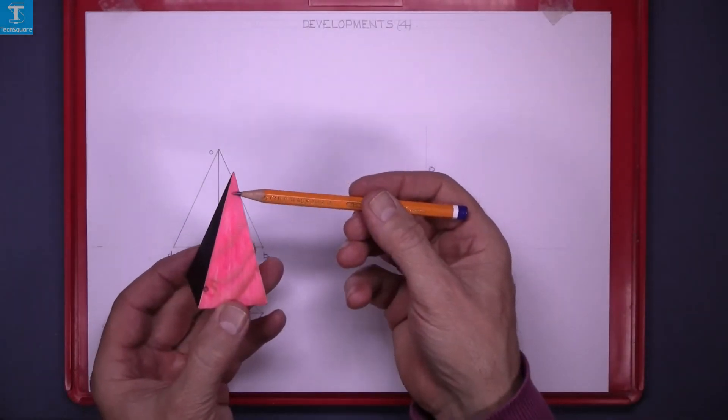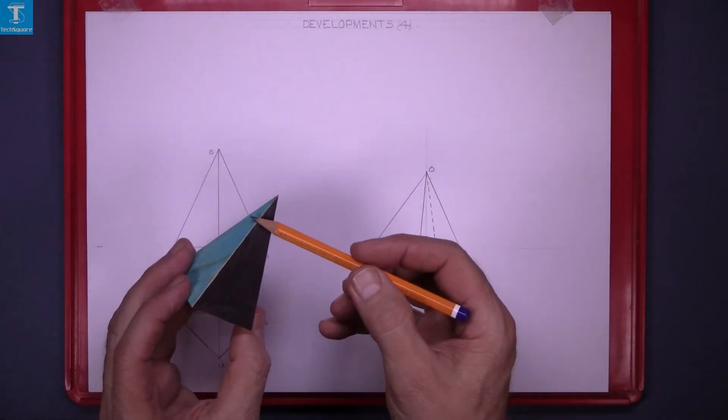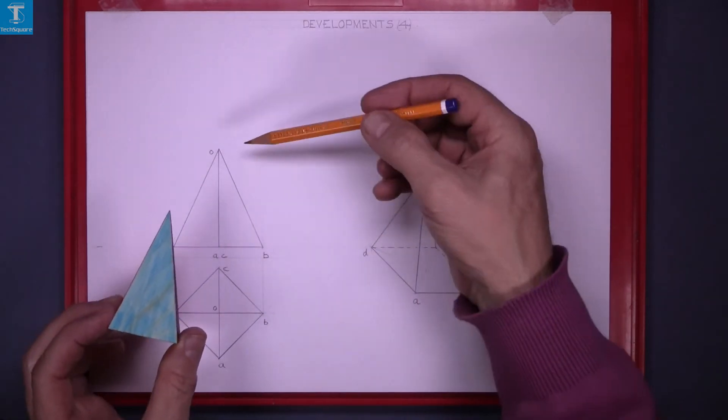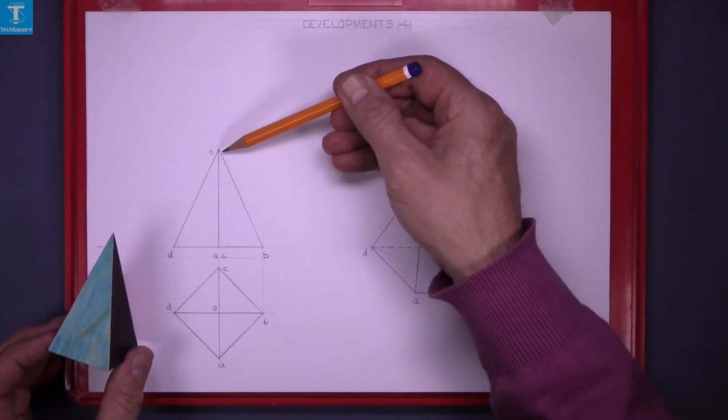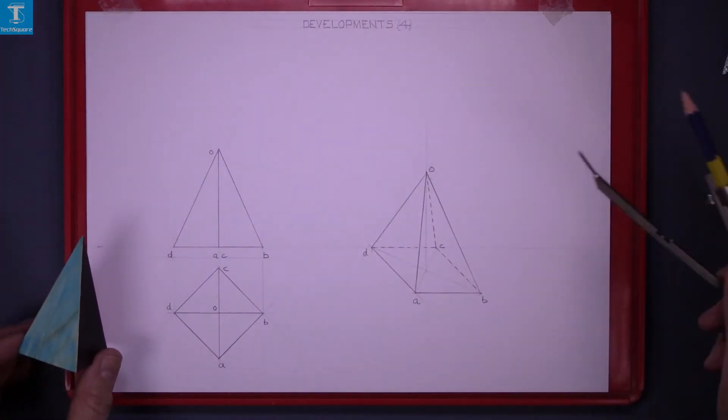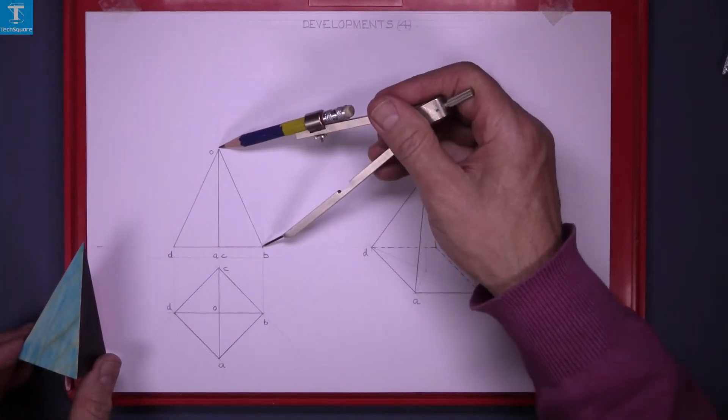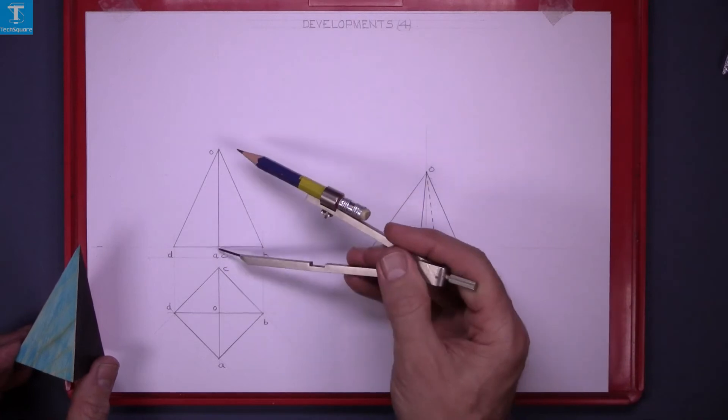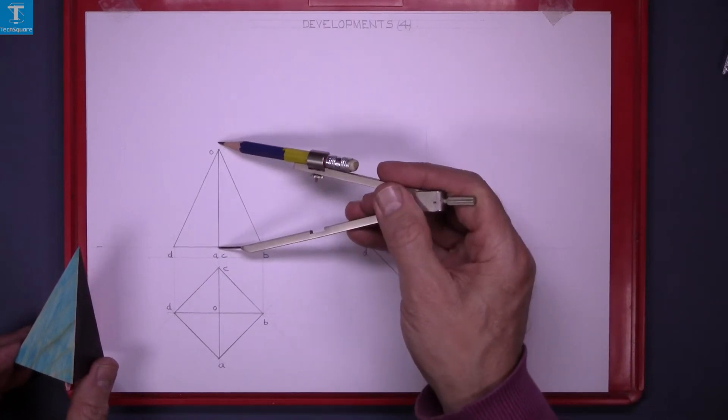When we look at the model we can see that all these lines are the same length, but in the elevation this line appears to be longer than this line. With the compass we can check that. That's set to the length but that line is definitely shorter.